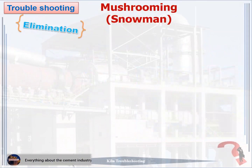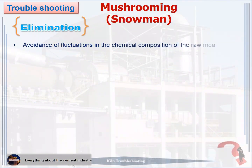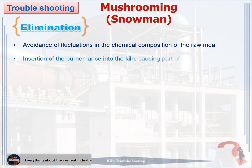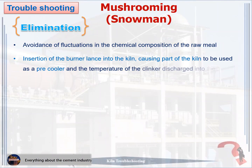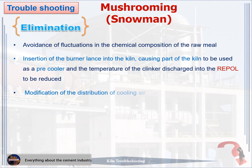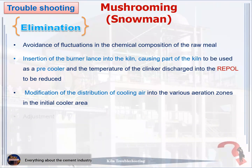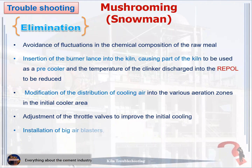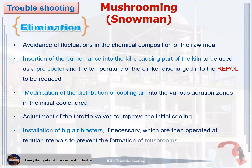How to eliminate mushrooming / snowman: one, avoidance of fluctuations in the chemical composition of the raw meal. Two, insertion of the burner lance into the kiln, causing part of the kiln to be used as a pre-cooler, reducing the temperature of the clinker discharged into the repole. Three, modification of the distribution of cooling air into the various aeration zones in the initial cooler area. Four, adjustment of the throttle valves to improve the initial cooling. Five, installation of big air blasters if necessary, operated at regular intervals to prevent the formation of mushrooms.